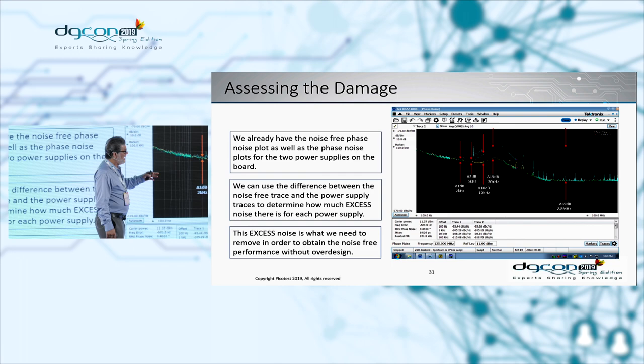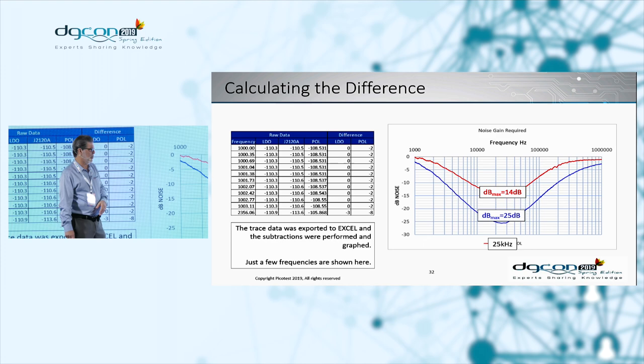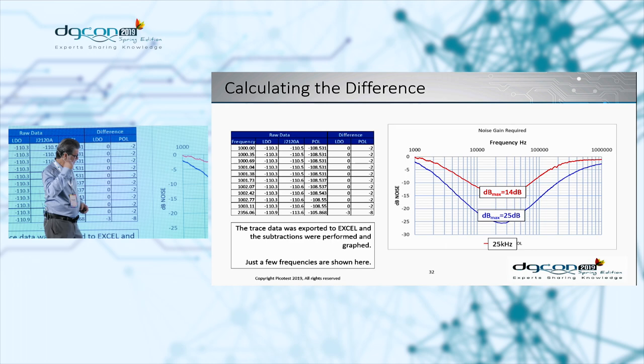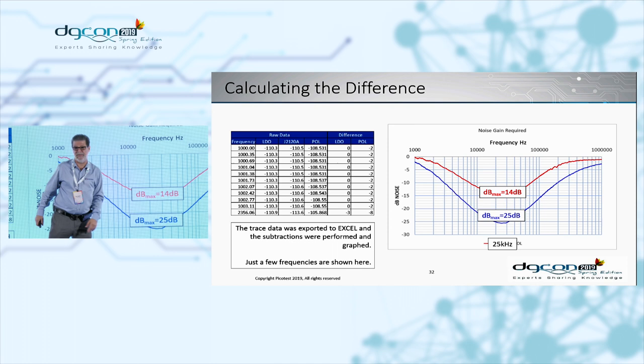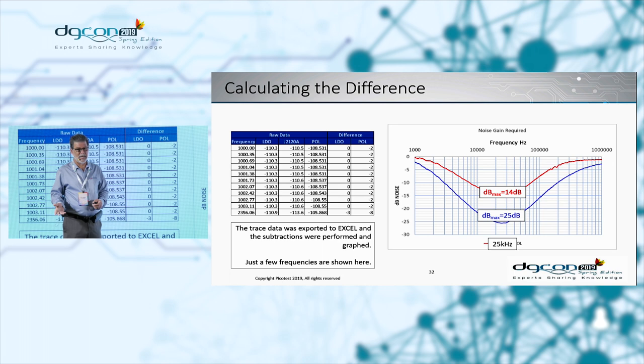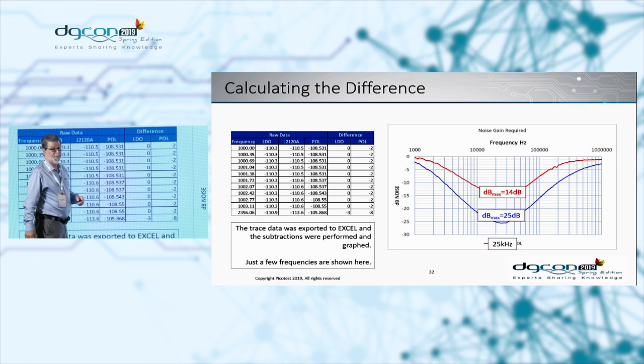I can do exactly the same thing with the switching regulator and end up with two charts showing the attenuation needed at any frequency to match the noise-free regulator. This says I can use the switching regulator if I provide 25 dB of attenuation, or the linear regulator if I provide 14 dB of attenuation. If I can do that, I can meet the noise-free performance of the clock. I figured that out just by looking at the difference between those traces — much easier.